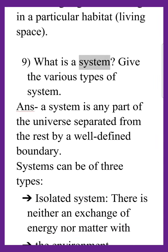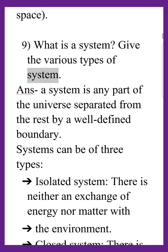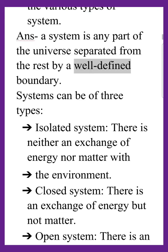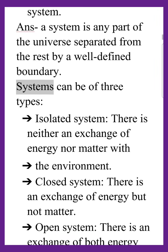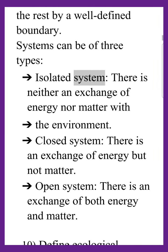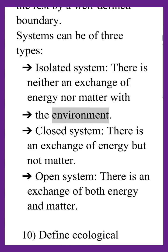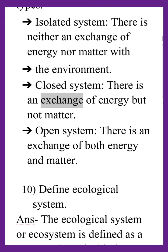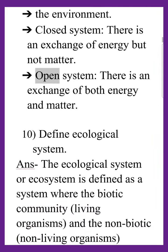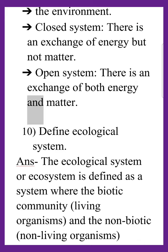What is a system? Give the various types of system. A system is any part of the universe separated from the rest by a well-defined boundary. Systems can be of three types: Isolated system — there is neither an exchange of energy nor matter with the environment. Closed system — there is an exchange of energy but not matter. Open system — there is an exchange of both energy and matter.